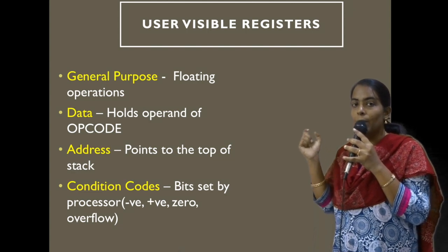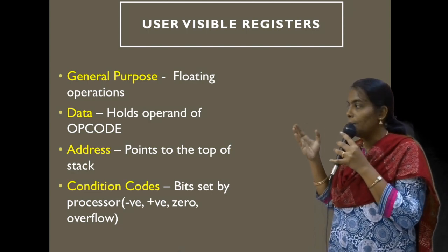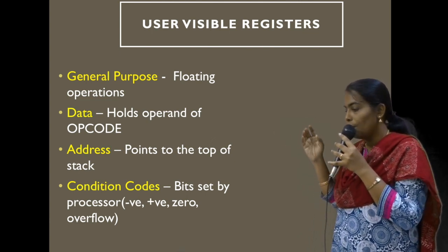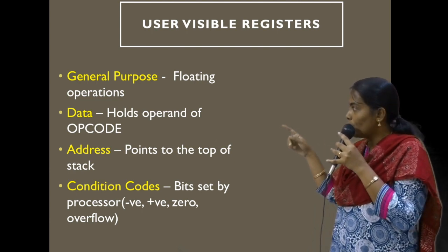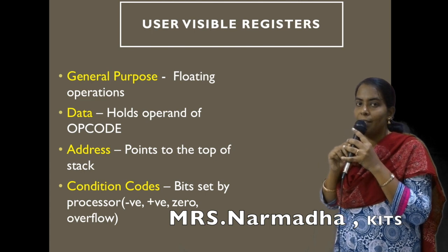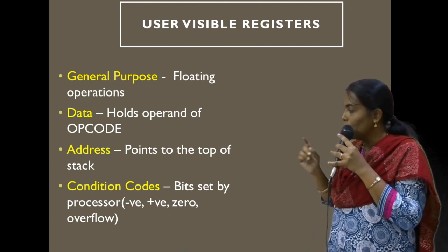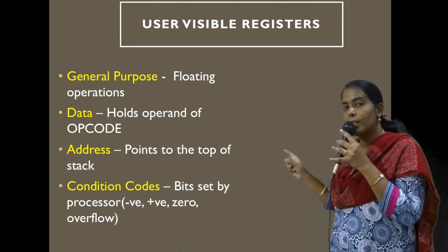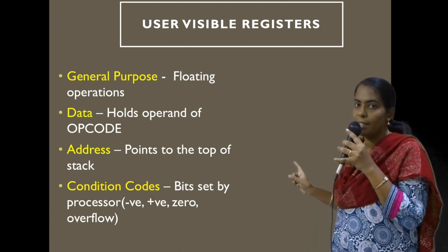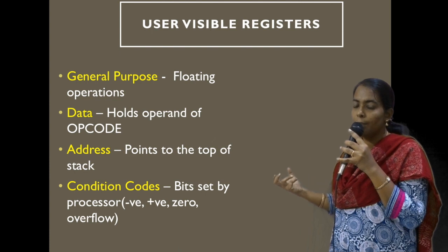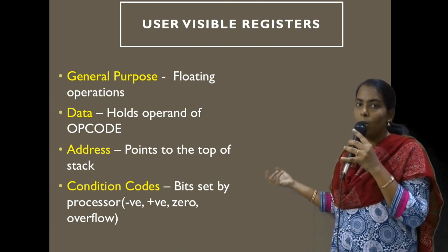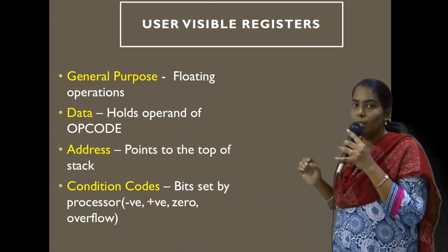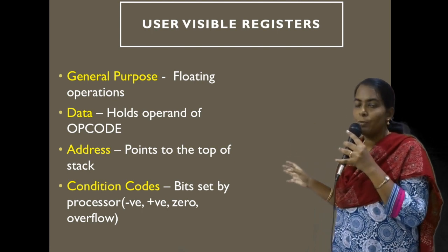The second type is the data register, which holds the operand available along with the instruction — for example, in 'ADD R1, 10', the value 10 is an operand stored in a data register. The next is the address register, which points to the top of the stack. The last type is the condition code register, whose bits are set by the processor after computation — for example, if the result is positive, negative, or causes an overflow, that will be stored in the condition code register.